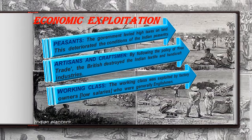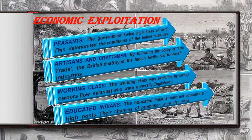The working class was exploited by factory owners who were generally Englishmen. Extremely low salaries were paid to factory workers. Due to the unjust economic policies of the British, many people including peasants and artisans suffered during British rule. Educated Indians were not appointed to high posts. High posts in civil and military services were only reserved for the British, and the chances of promotion were also weak.